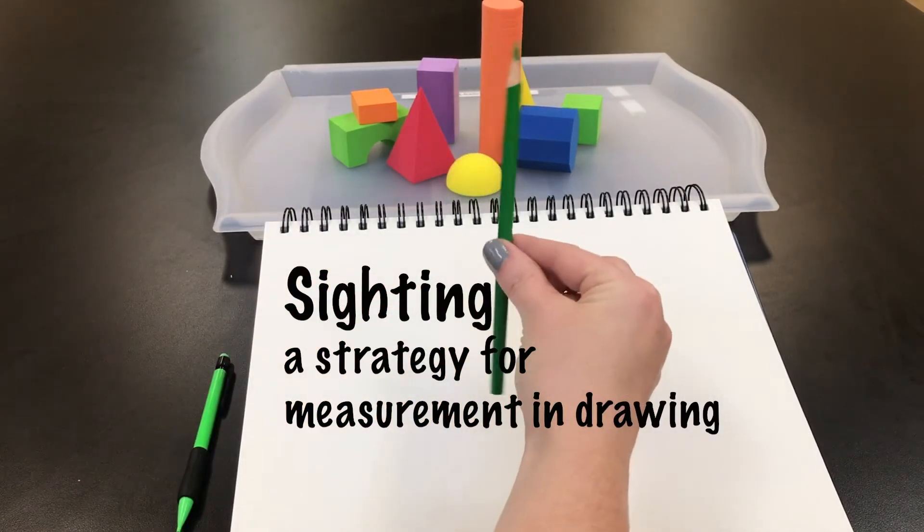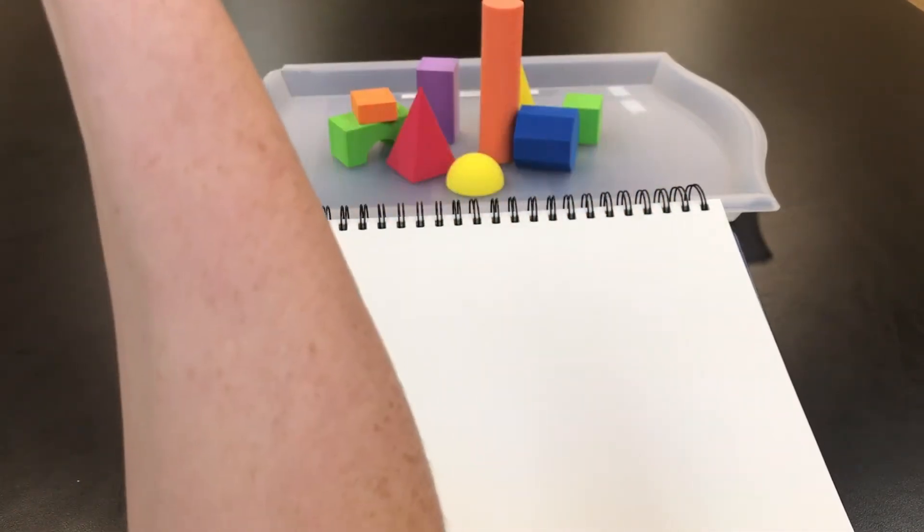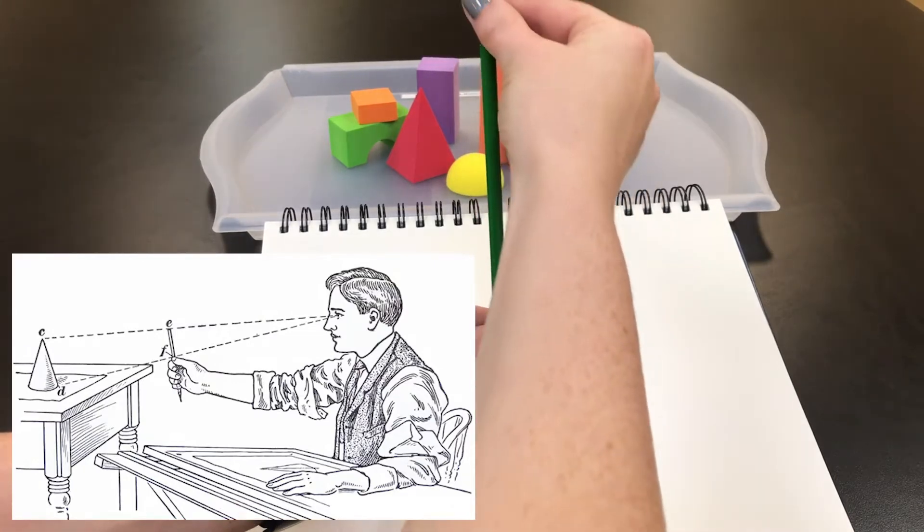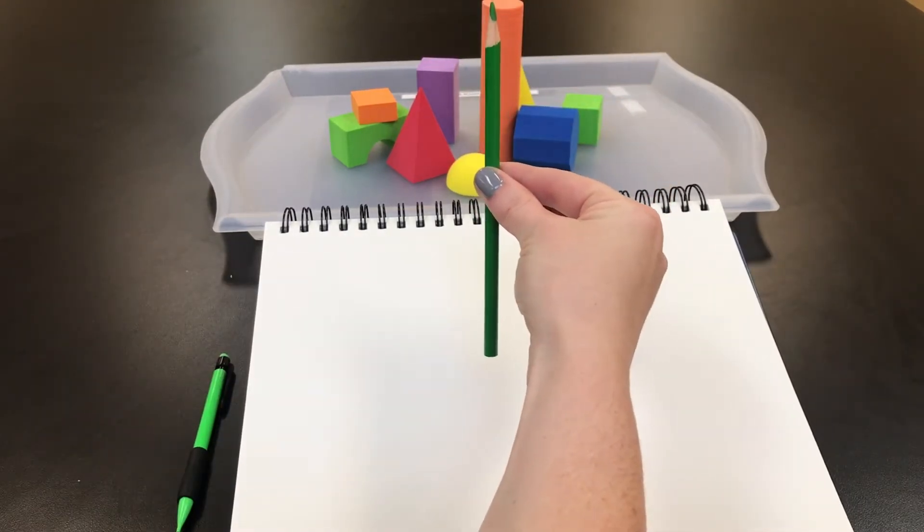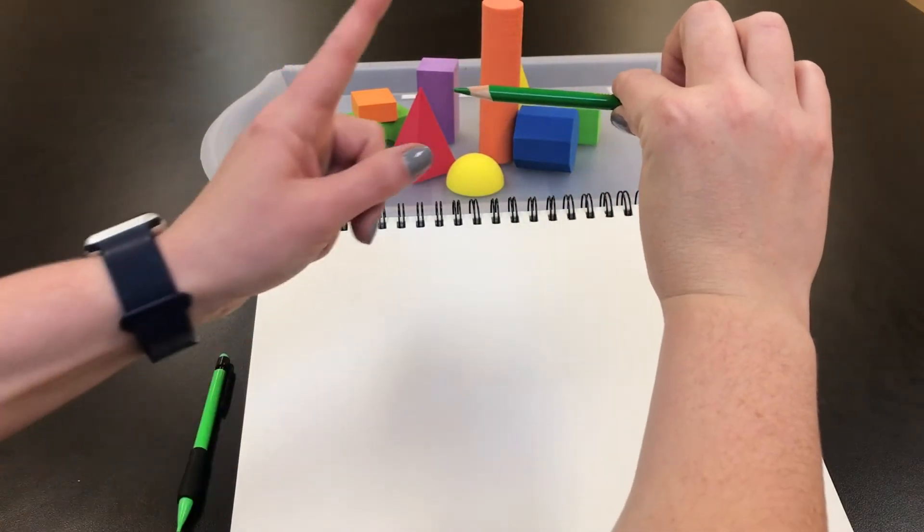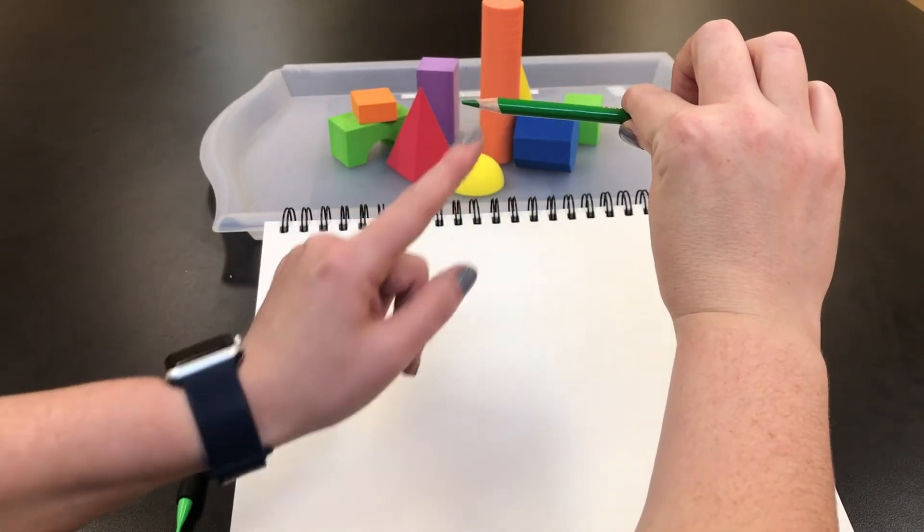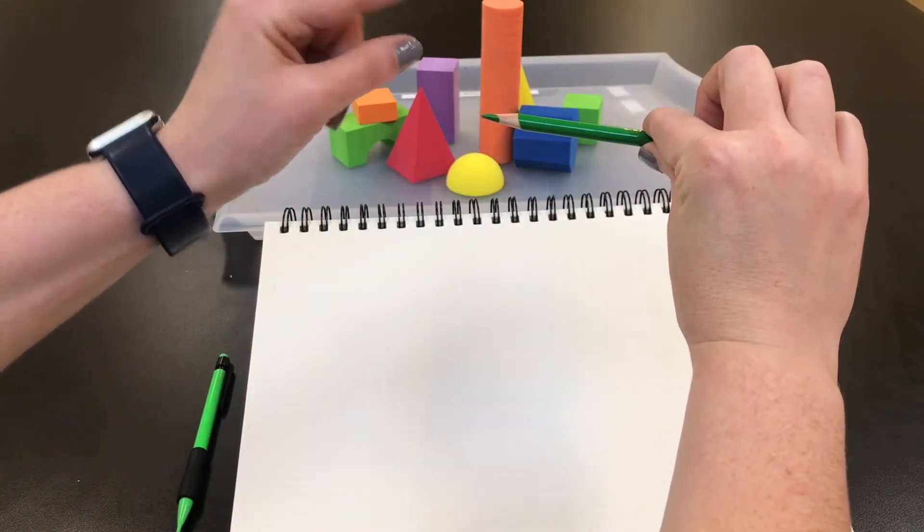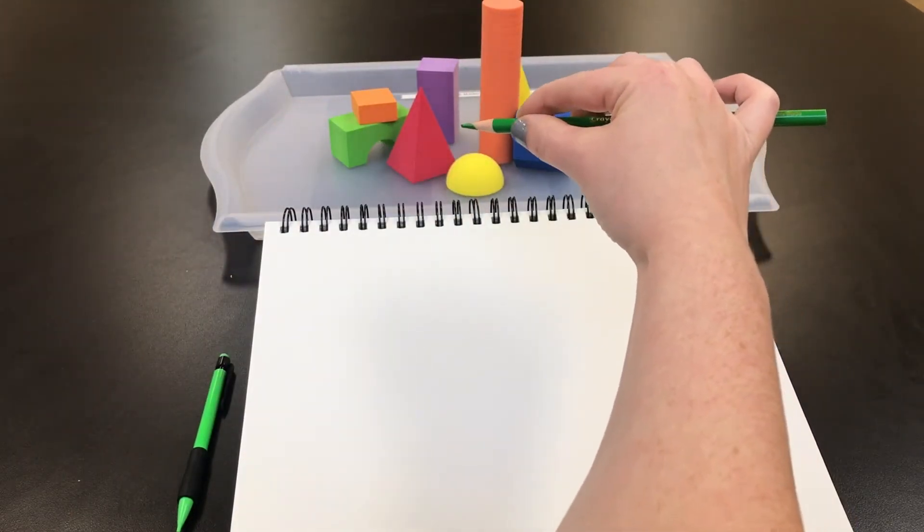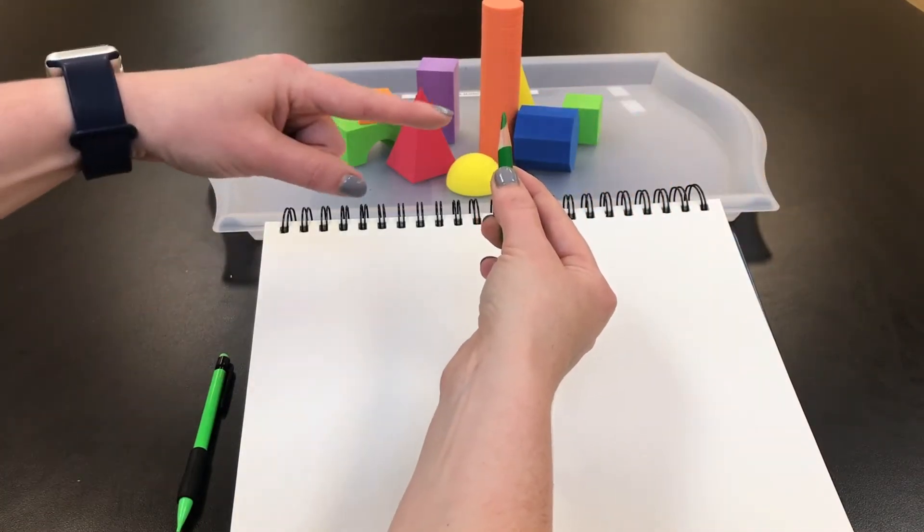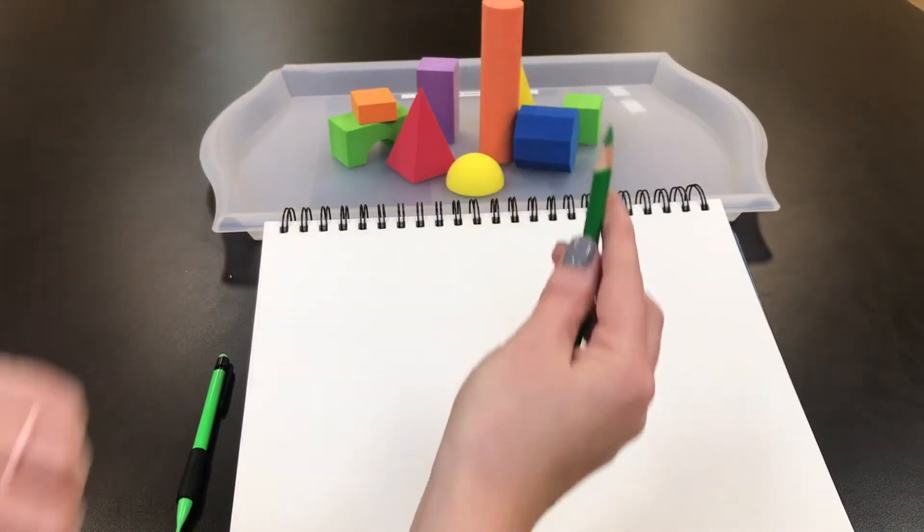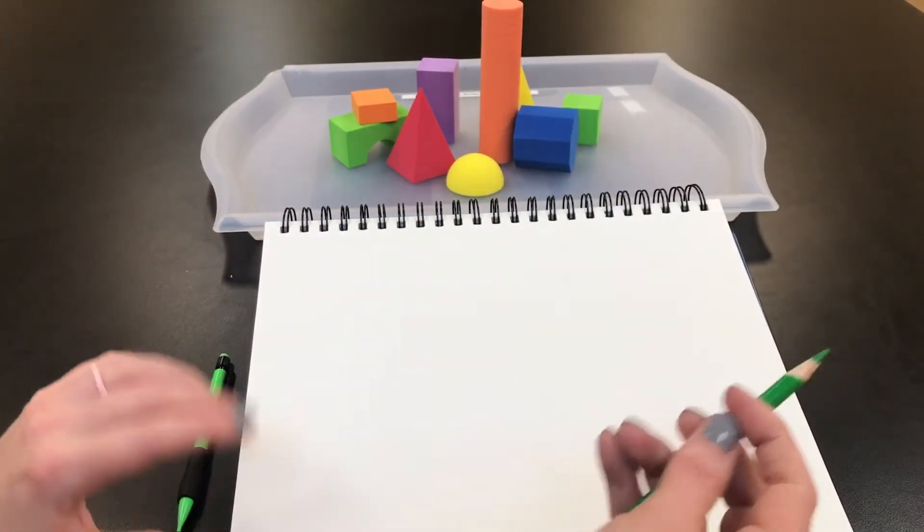I'm going to hold my arm out with a pencil in front of me with a straight elbow, not a bent elbow, and I'm going to look at that orange object. I'm going to slide my fingers down. That's about how tall my orange object is. Then when I turn my pencil sideways, it looks like it goes to about here, which means my orange object is four times taller than it is wide. Let's test that. Slide my finger, it's that wide. One, two, three, well closer to three and a half. So I'm using the proportions I used from my sighting to help.